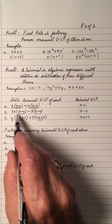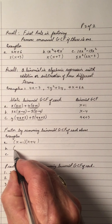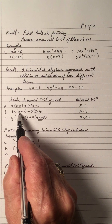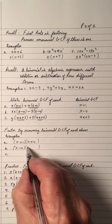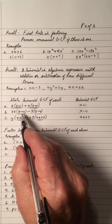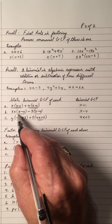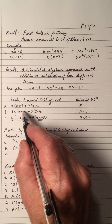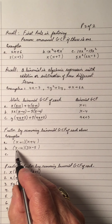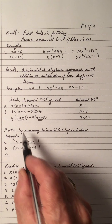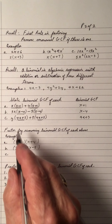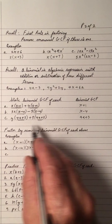In part b, the binomial GCF is x minus 4. We put x minus 4 in the bracket. Dividing the first expression by x minus 4 leaves 3x, and dividing the second expression by x minus 4 gives negative 5. So the factored form is (x minus 4)(3x minus 5). In part c, the binomial GCF is 4a plus 3.